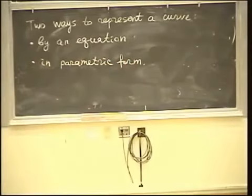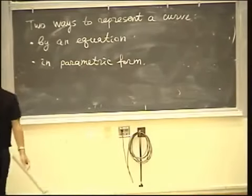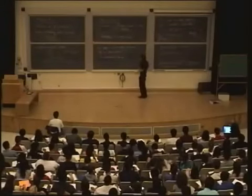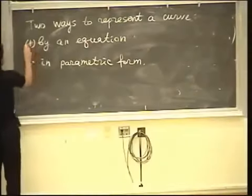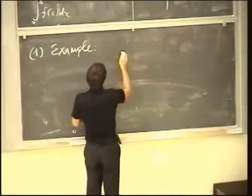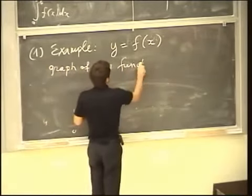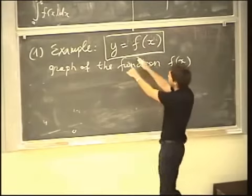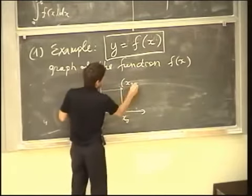What do I mean by representing by an equation? This is something I have kind of used implicitly, because I talked about a graph of a function. And what is a graph of a function but a curve? It goes without saying, after single variable calculus, that a graph of a function in one variable is such a curve on a plane. An example would be an equation like y equals f of x — in other words, it's the graph of a function f of x.